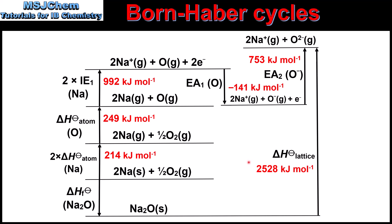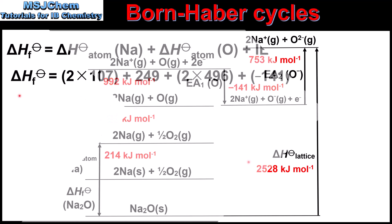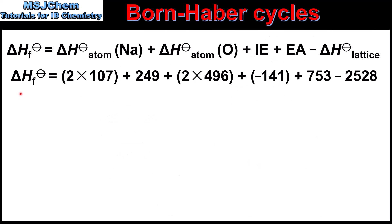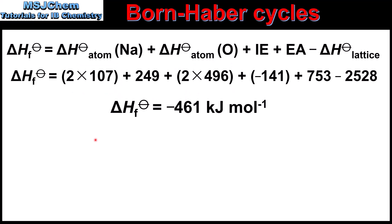Next we'll use these values to calculate the enthalpy of formation for sodium oxide. Here we have the equation for the enthalpy of formation of sodium oxide together with the values. Note that we are multiplying the enthalpy of atomization and the first ionization energy of sodium by 2. This gives us an enthalpy of formation of sodium oxide of minus 461 kilojoules per mol.